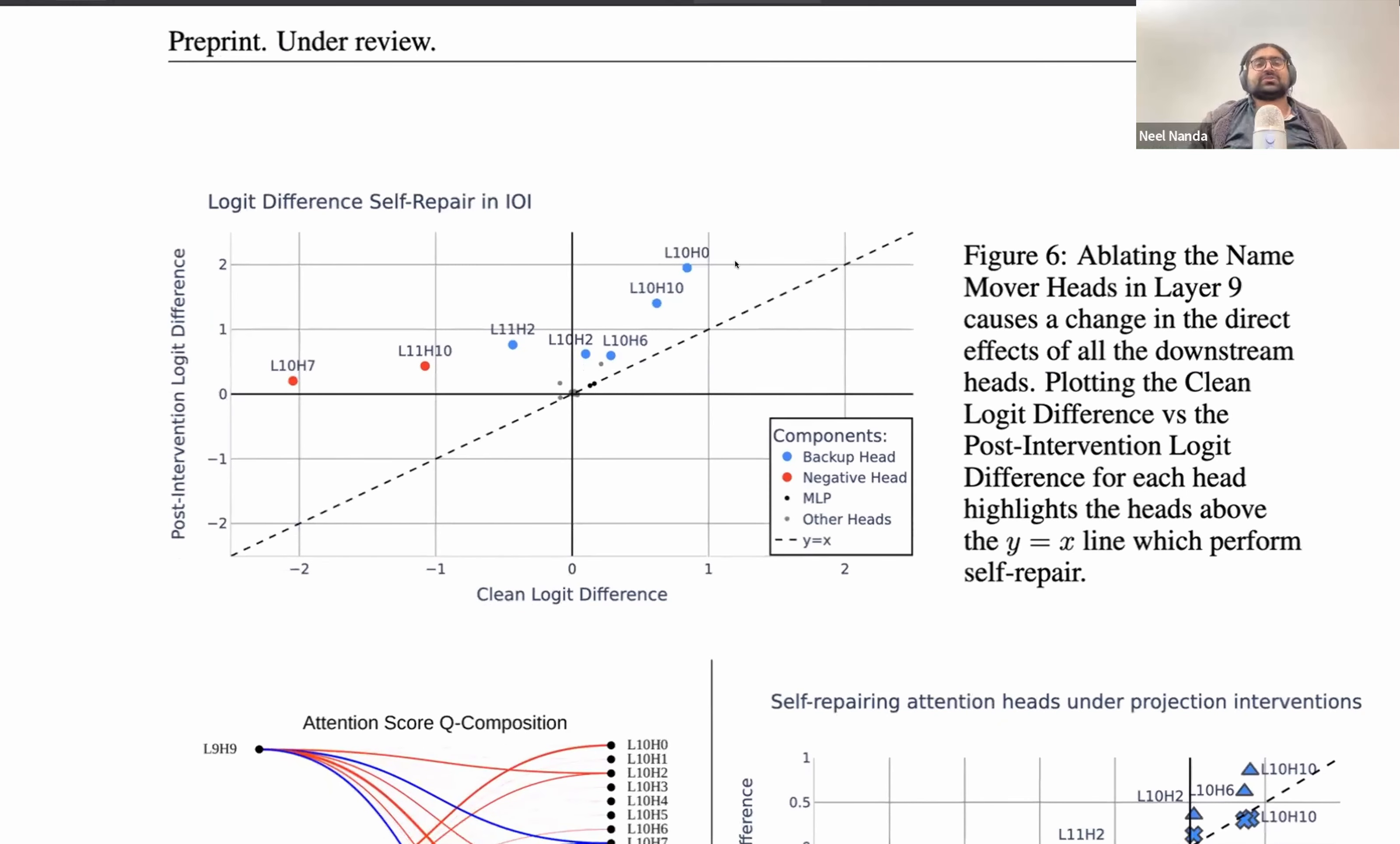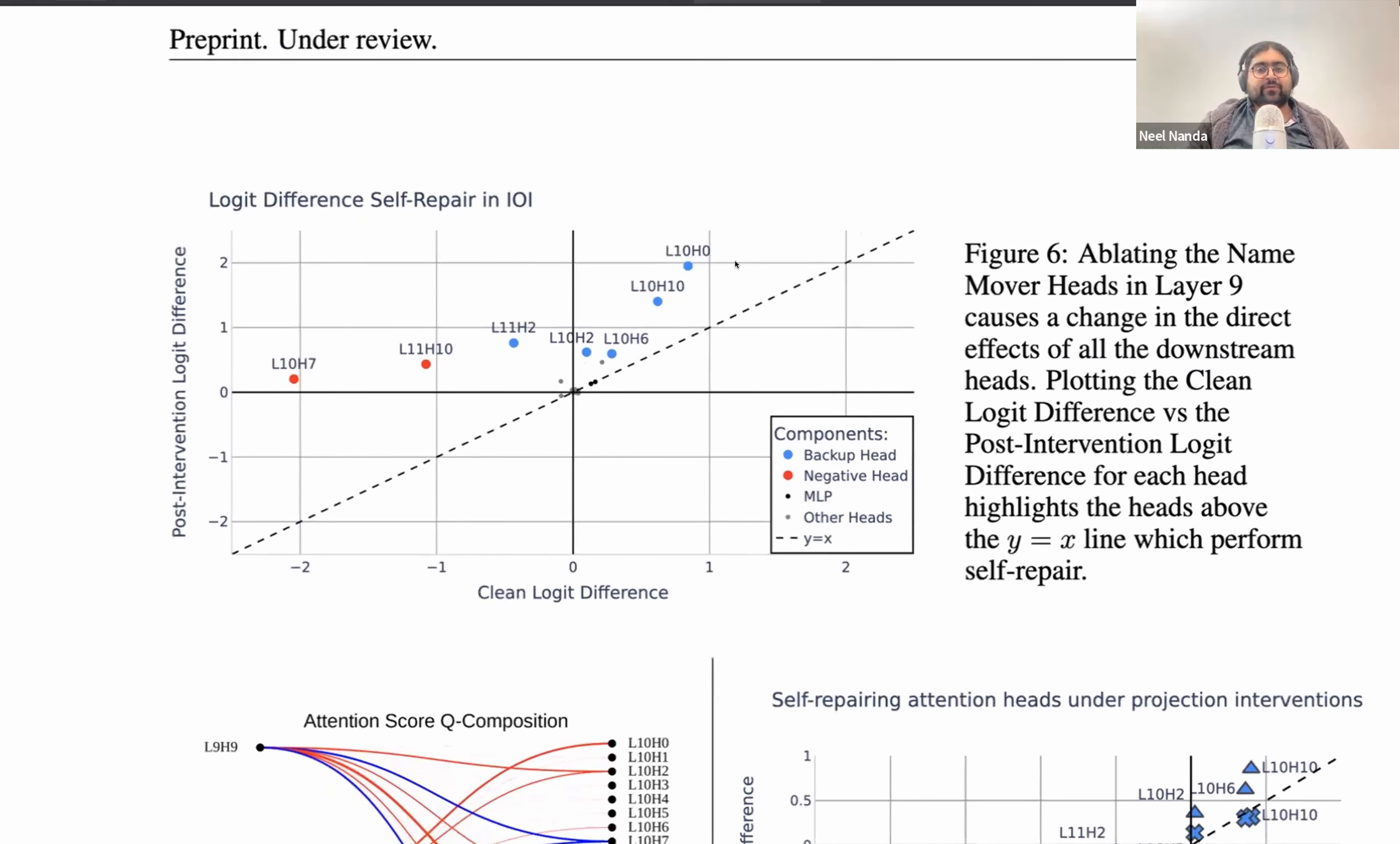The key takeaway here is that this head and a couple of other heads are all positively reacting to the negative reduction in the ablation of the name mover heads. Because of all these heads becoming positive or more positive than they were originally, this produces self-repair and the layer 9 name mover heads are backed up. Just recapping what's in this graph, logit difference is our metric of overall task performance. Is the logit for the correct next name bigger than the logit for the incorrect next name? We've got this dotted line and the x-axis is the performance on the task with no intervention. The y-axis is the performance on the task when you delete the key name mover head. If there's no change, a head will remain on the x equals y line.